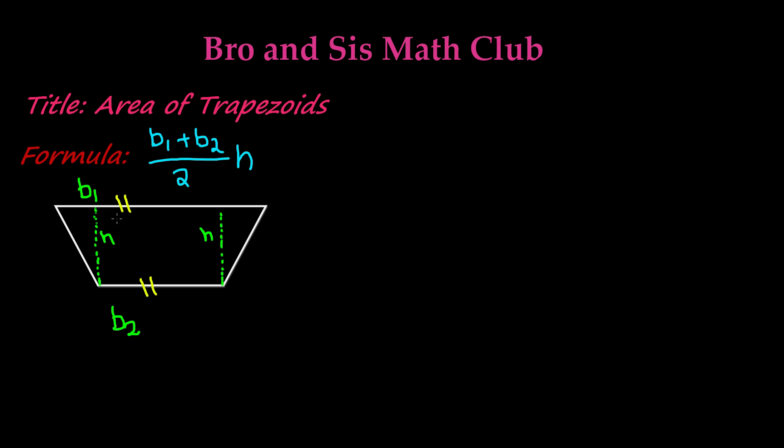So let's go ahead and give some value to our bases and our height. Let's say that base 1 has the value of x plus 2. And base 2 has the value of x plus 1. And our height is 7 inches.